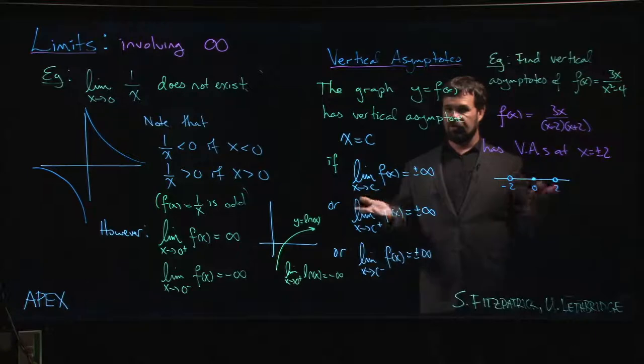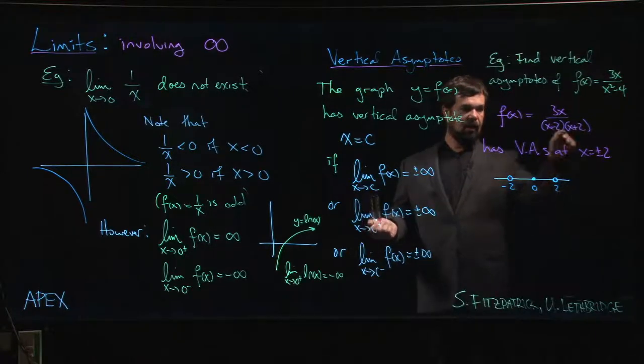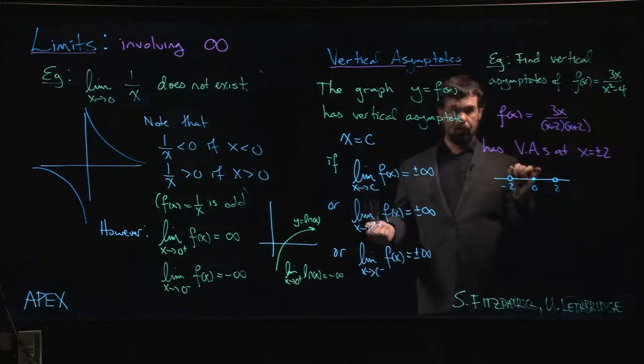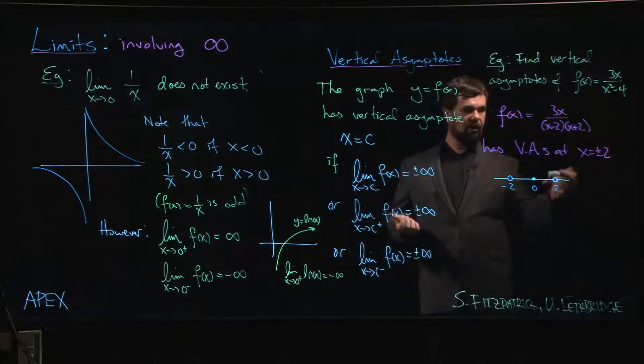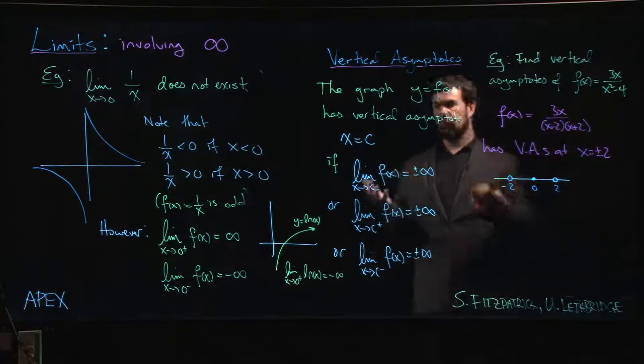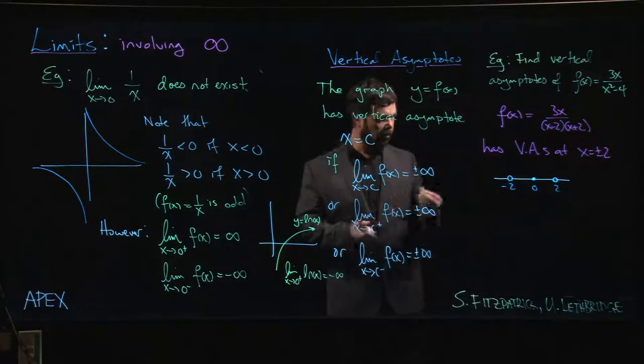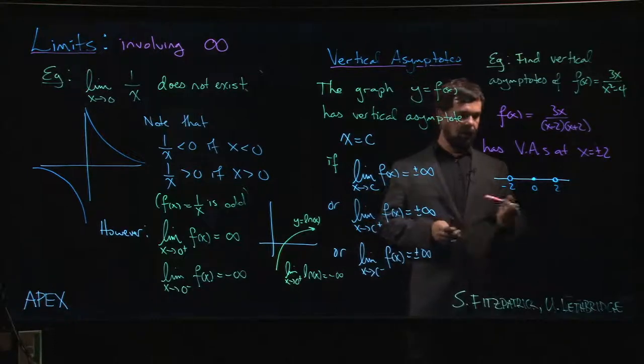A zero in the numerator is simply an x-intercept. That's just a place where the graph crosses the x-axis. Zeros in the denominator, well, those are asymptotes. So often where people go wrong is they think zeros are bad, zeros are always bad. But zeros aren't an issue in the numerator. They're only an issue if they're in the denominator.